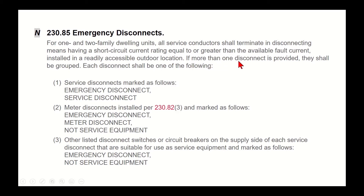If more than one disconnect is provided, they shall be grouped. For one or two family dwellings, all service conductors shall terminate in a disconnecting means — not a service disconnecting means — and that disconnecting means has that short-circuit current rating and has to be located outdoors, readily accessible. If more than one disconnect is provided, they shall be grouped.